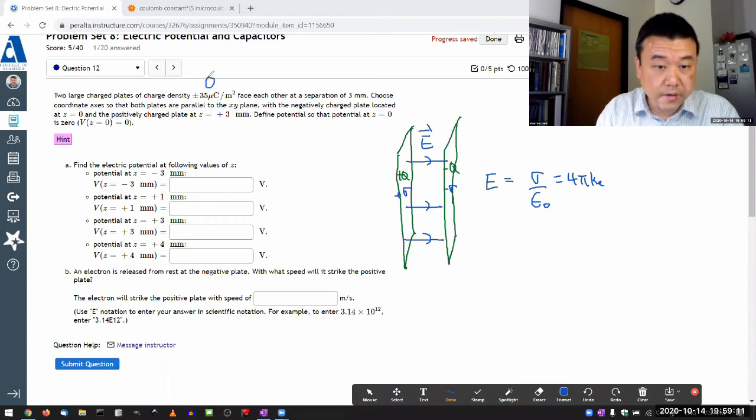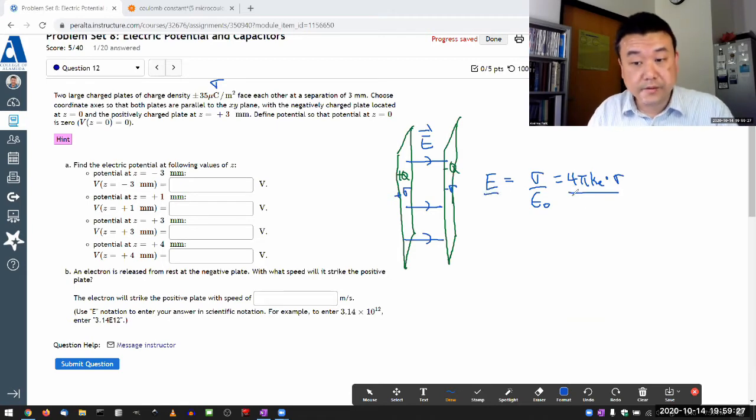Or in this case, since we are given Q and the... oh wait, wait, that is the sigma. We are given charge density directly. So this is my charge density times charge density. So this gives you the electric field.